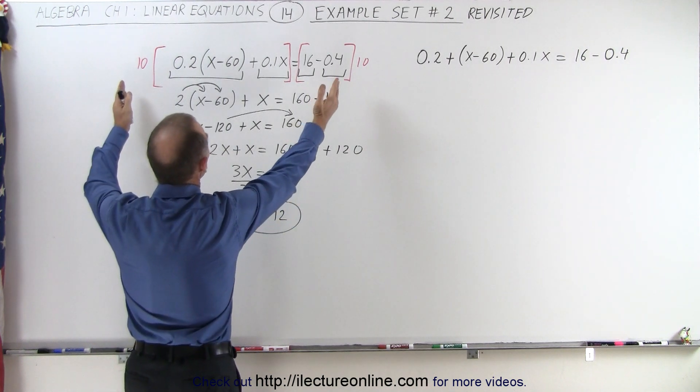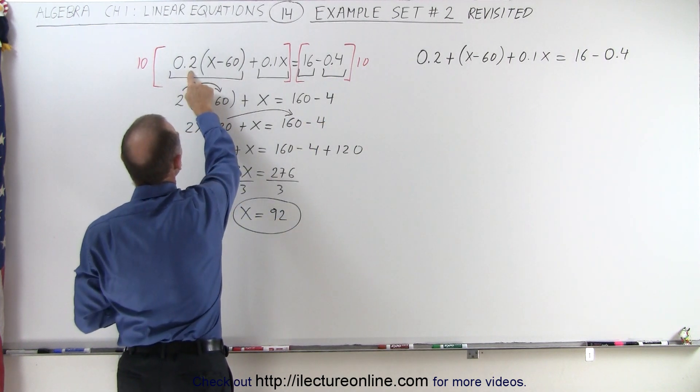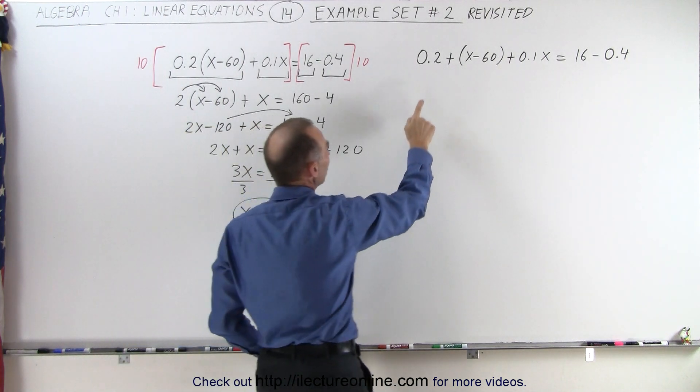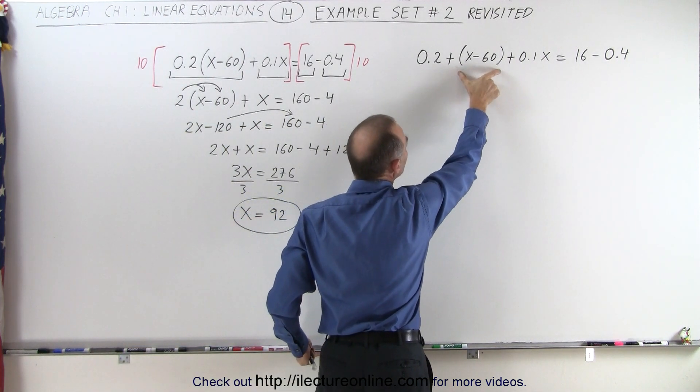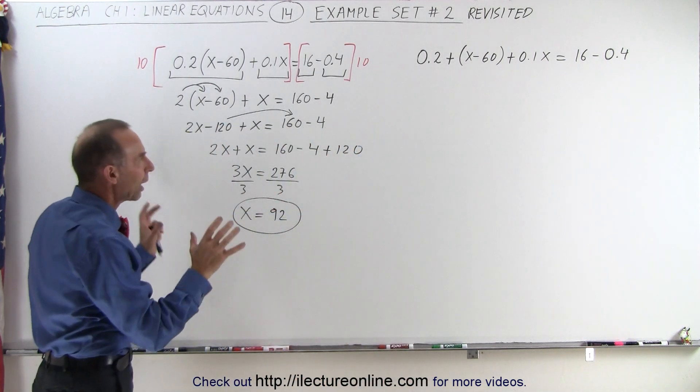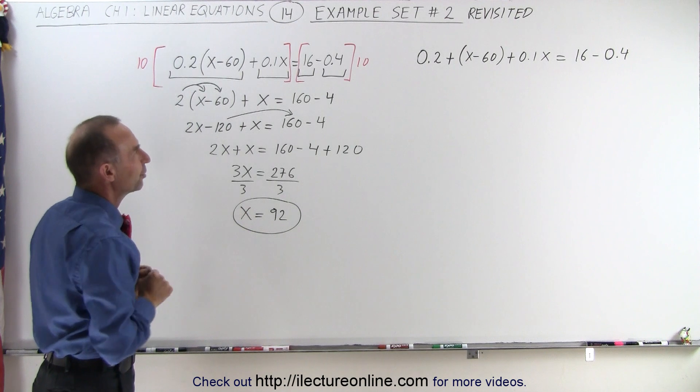This is the problem we had on the previous video. We had 0.2 times the quantity x minus 60 and here what we've done is we've written 0.2 plus the quantity x minus 60. Why did I do that? Well I wanted to point out a very important difference.